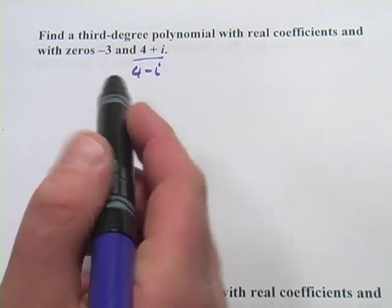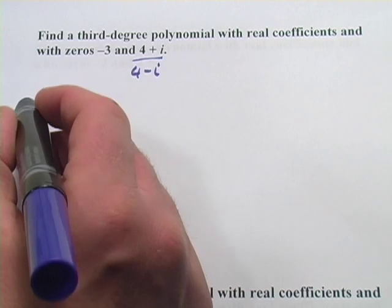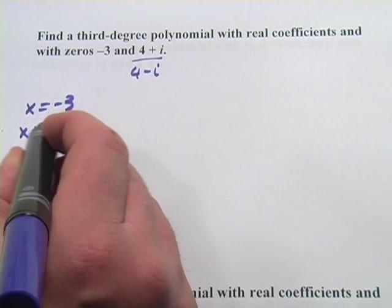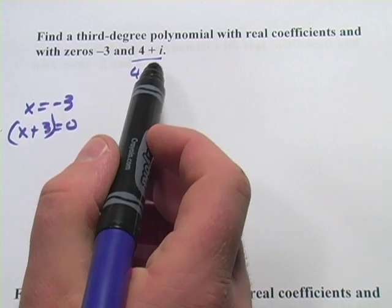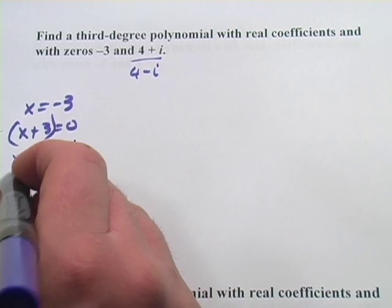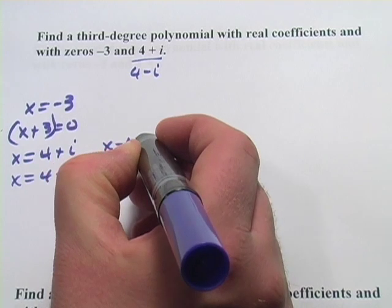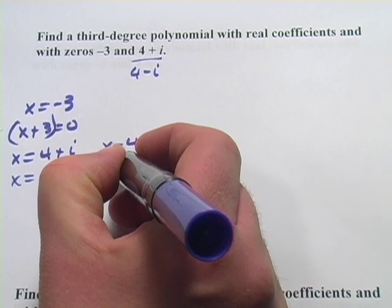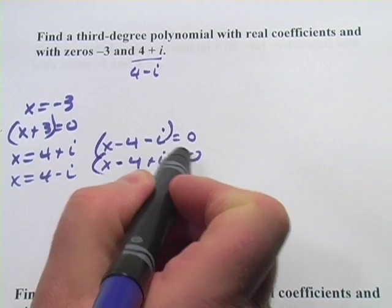Now that we have them, we want to convert these into factors. Starting with negative 3: we have x equals negative 3, and adding 3 to both sides gives x plus 3 equals 0, so x plus 3 is our first factor. Doing the same for the complex roots, x equals 4 plus i and x equals 4 minus i give us x minus 4 minus i equals 0 and x minus 4 plus i equals 0. Those two are our other factors.